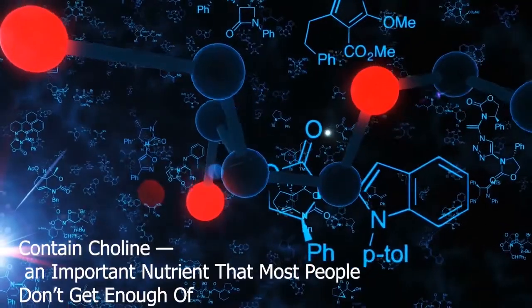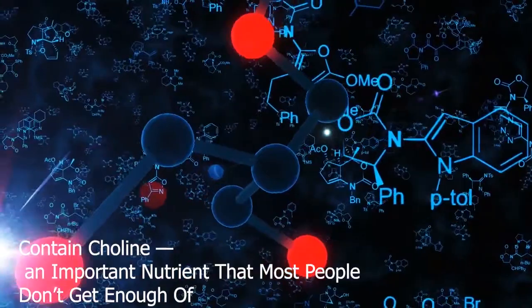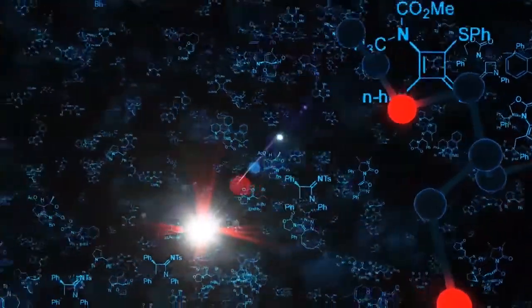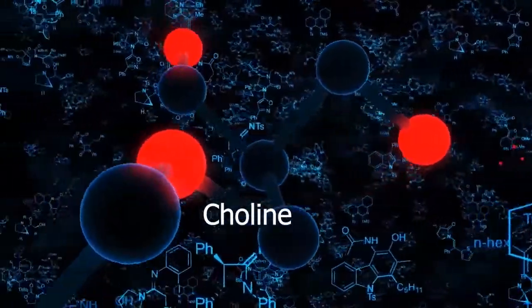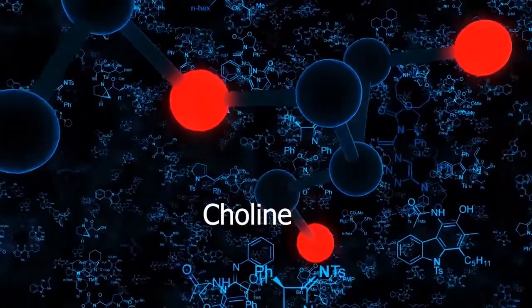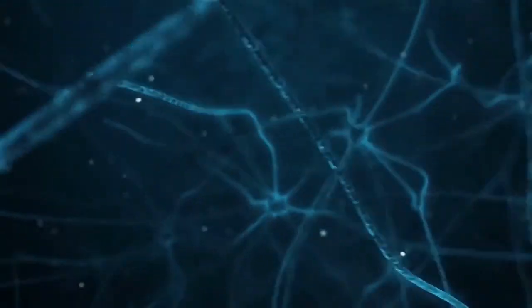Eggs are among the best dietary sources of choline, a nutrient that is incredibly important but most people aren't getting enough of. Choline is used to build cell membranes and has a role in producing signaling molecules in the brain along with various other functions.